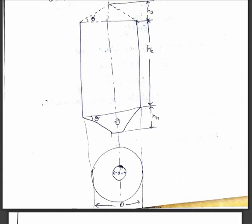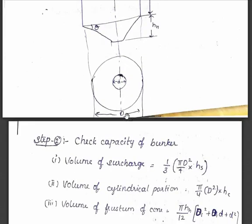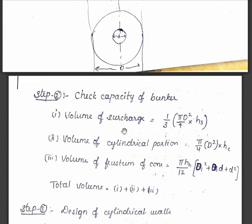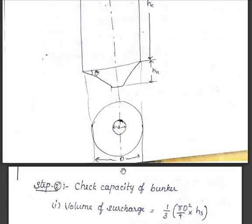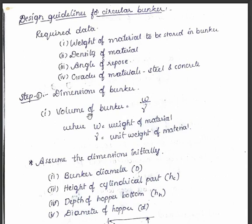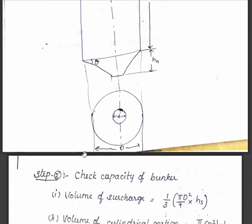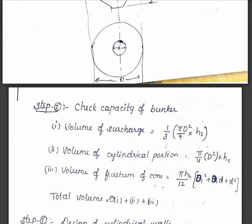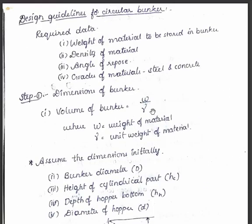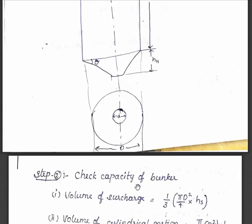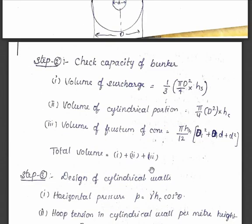We now have the volume in all portions of the total bunker. We have to cross-check this total volume with the volume we calculated initially. If the total volume from the assumed dimensions is greater than or equal to the volume calculated from the given weight, then it is okay and we can proceed with design. Otherwise, we have to change the dimensions.